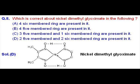Question number 8, in which nickel dimethyl glyoxymate chelate compound is given to us and this compound contains two 5-membered rings and two 6-membered rings.